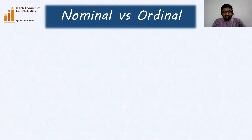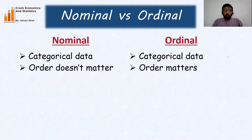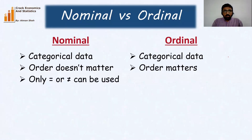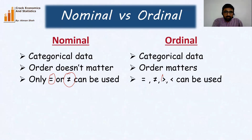Now, what is the difference between these two? Both are categorical data. In nominal data, order doesn't matter; in ordinal data, order is very important. In nominal data, we can only use equal to or not equal to as mathematical operations. In ordinal data, we can additionally use greater than or less than, because order matters.